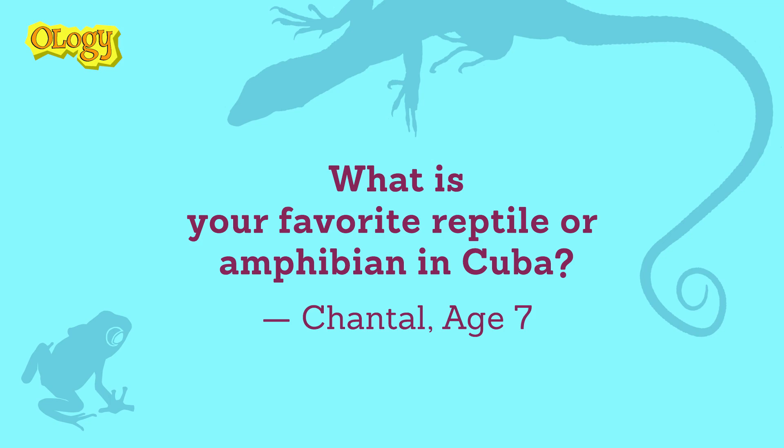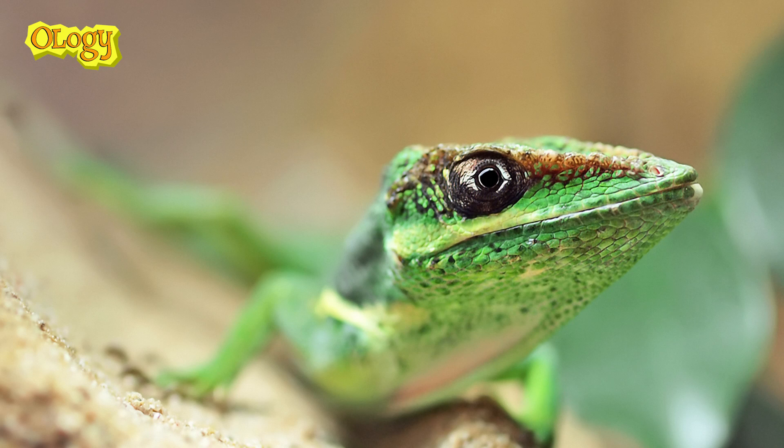What is your favorite reptile or amphibian in Cuba? I would say I have two. For a reptile, my favorite is the crown anole, which is a green lizard. It's called a crown anole because it lives up in the crowns and very tops of trees. It gets to maybe about two to two and a half feet in length, and has lovely scales and beautiful markings on its head — a very beautiful animal, really adapted for living at the tops of trees.